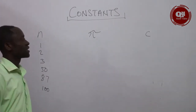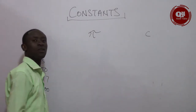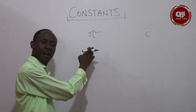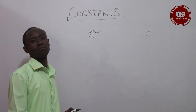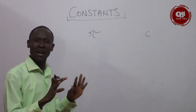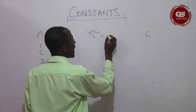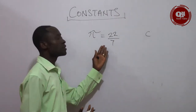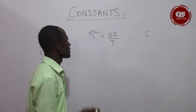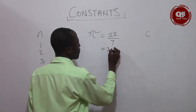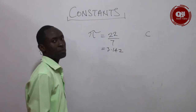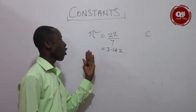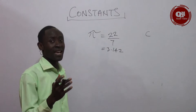We have another form of constants. This you see here is called pi. Pi has a numerical value, and that makes it a constant. The numerical value of pi is twenty-two over seven, and you can write this as three point one four two. So pi equals twenty-two over seven, or three point one four two, and it is a constant.